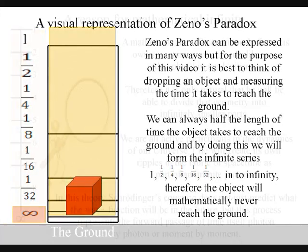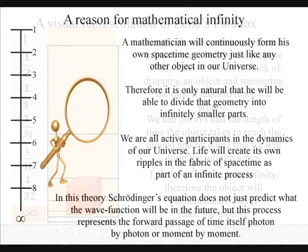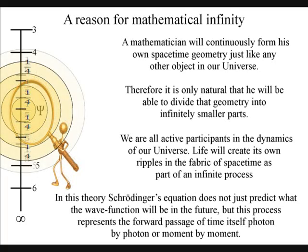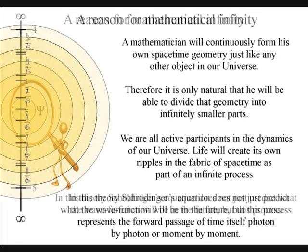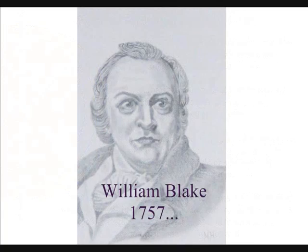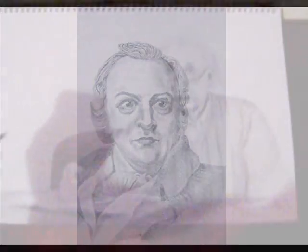A mathematician will be able to divide any number into infinitely smaller parts because of this process. For a poet or artist, this process continuously forms a blank canvas that they can interact with, forming the possible into the actual as time unfolds.